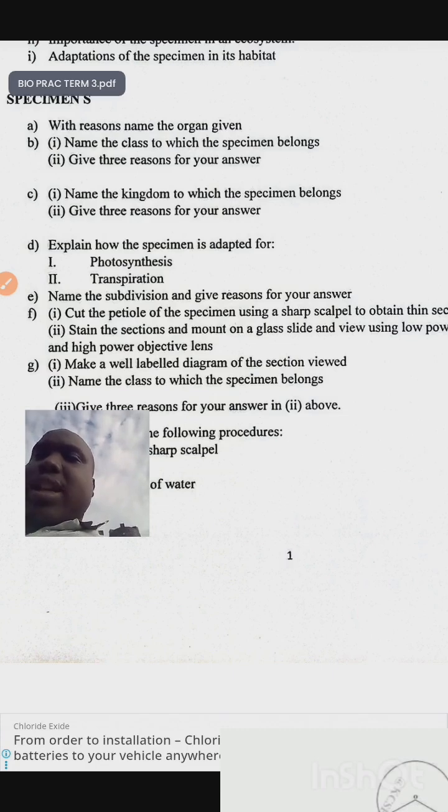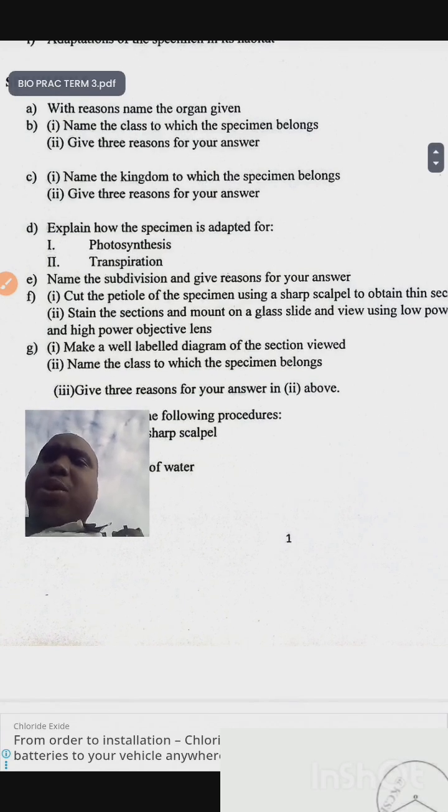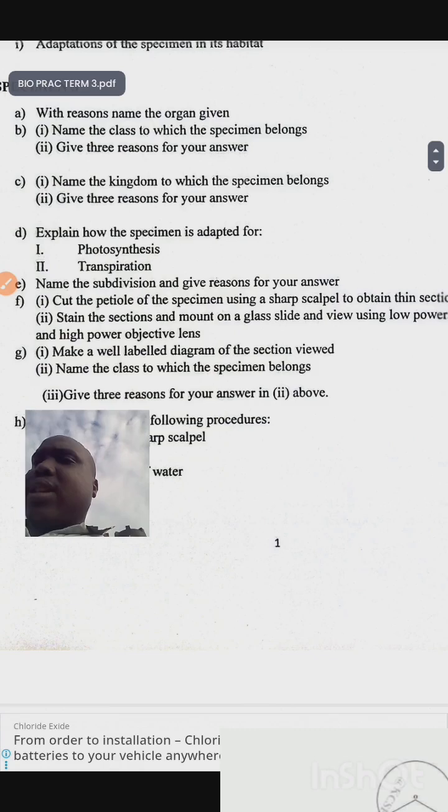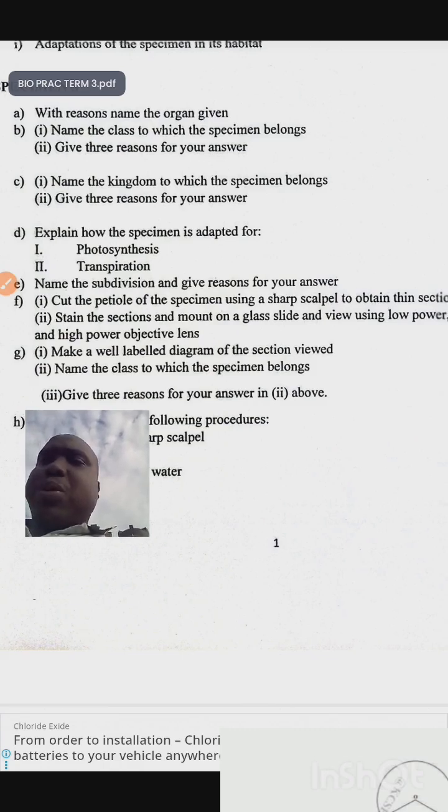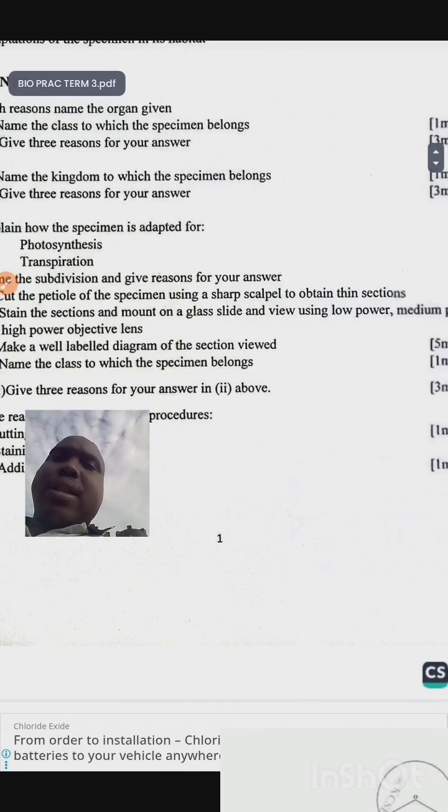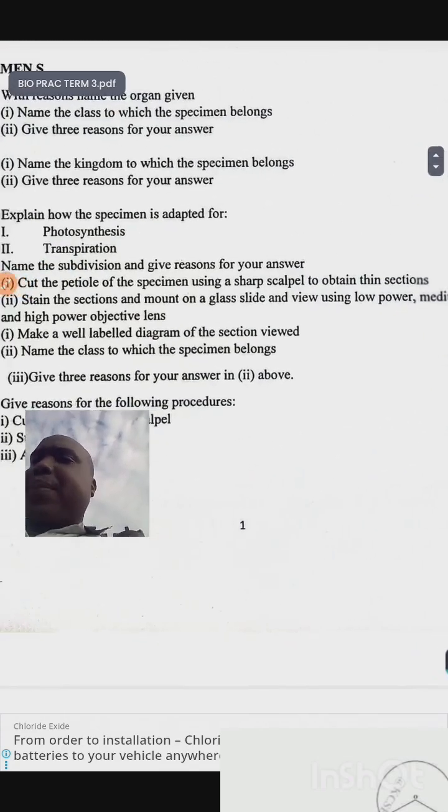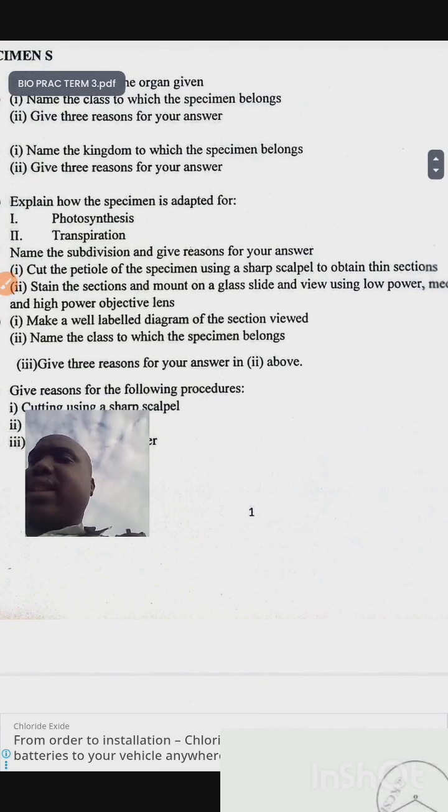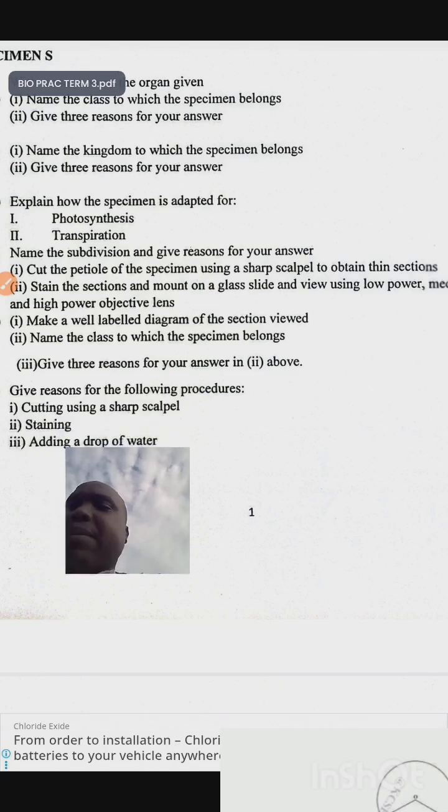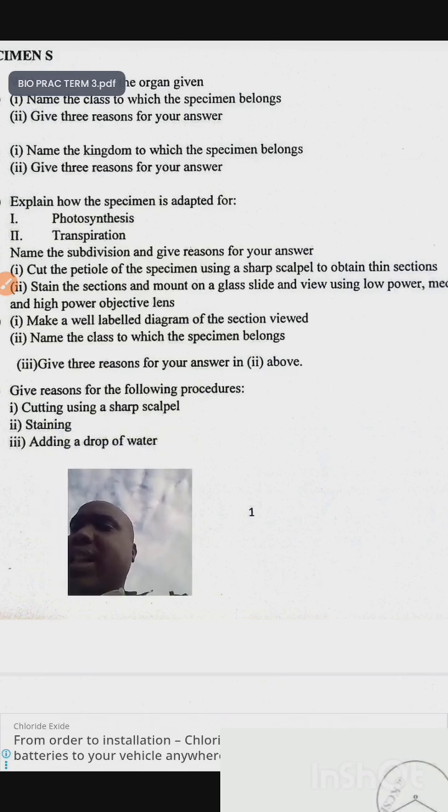Name the subdivision and give reasons for your answer. Cut a section of the specimen using a sharp scalpel to obtain thin sections. Stain the sections and mount on a glass slide, and view using lower power, medium power, and high power objective lens. Make a well-labeled diagram of the section viewed. Name the class to which the specimen belongs, give three reasons for your answer in Roman two above.